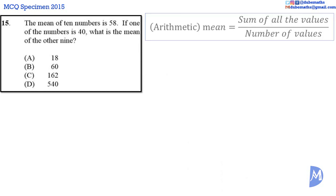Question 15. The arithmetic mean or just mean is equal to the sum of all the values over the number of values. We are given that the mean of 10 numbers is equal to 58. This means that 58 is equal to the sum over 10.